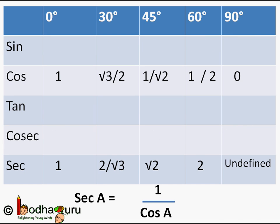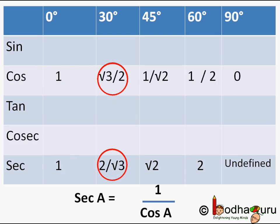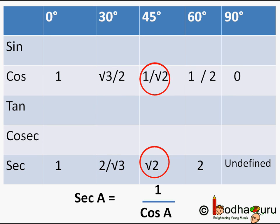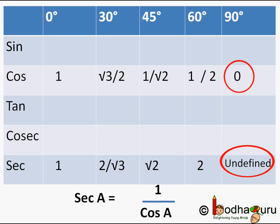Similarly, sec(a) = 1/cos(a). sec(0°) = 1/1 = 1. sec(30°) = 1/(√3/2) = 2/√3. sec(45°) = 1/(1/√2) = √2. sec(60°) = 1/(1/2) = 2. sec(90°) = 1/0, which is undefined.